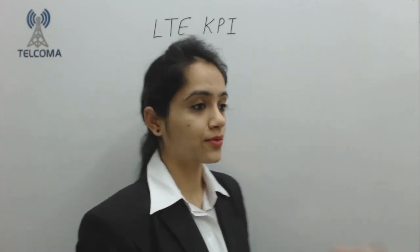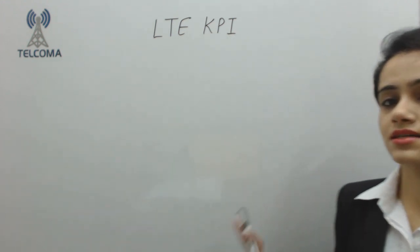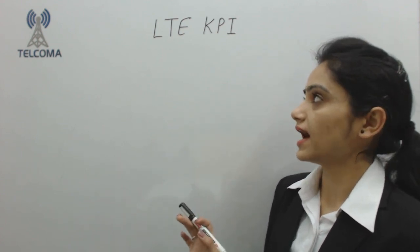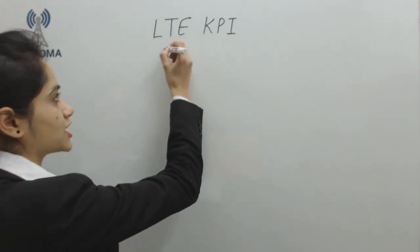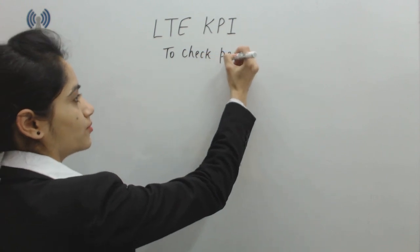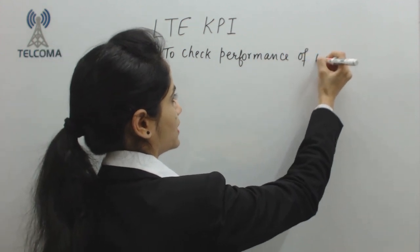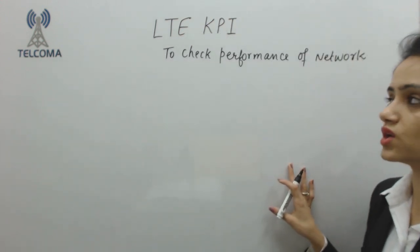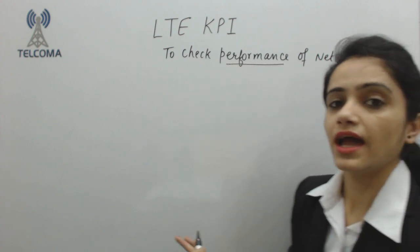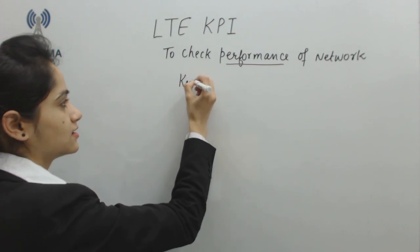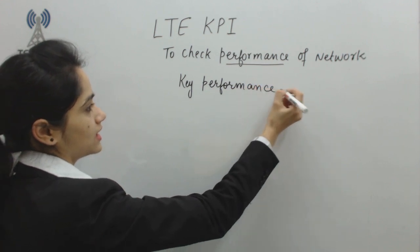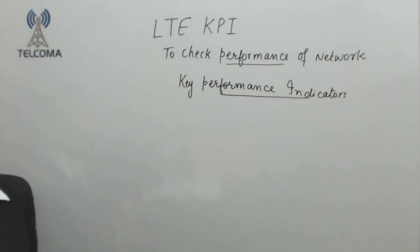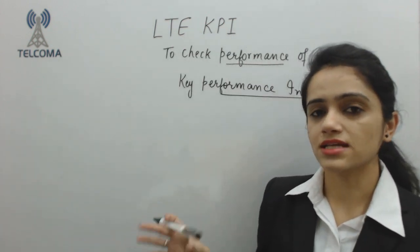In this class on LTE, we are going to discuss LTE KPIs. KPI stands for Key Performance Indicator. These KPI values are required to check the performance of the network. In the optimization process, we need to monitor KPI values to assess network performance. These are indicators of key performance parameters, and we have a KPI list according to the services.